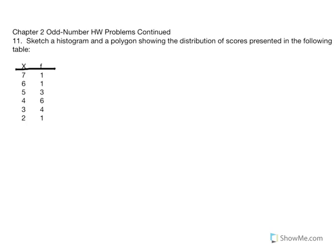These are the Chapter 2 odd number homework problems continued. In number 11, we're asked to sketch a histogram and a polygon showing the distribution of scores presented below.